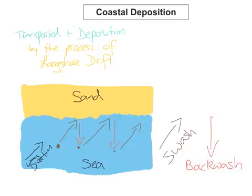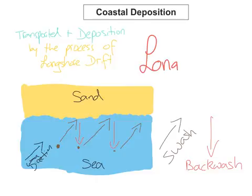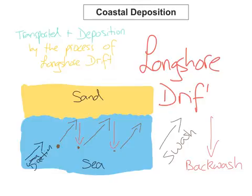This whole process of transporting material from one end of the beach to the other — the swash carrying the particles at an angle and the backwash bringing them straight back — is called longshore drift. This is really important; you need to know this. Because of longshore drift, the transportation and deposition of material along the beach and sea creates a few different coastal deposition features or landforms.